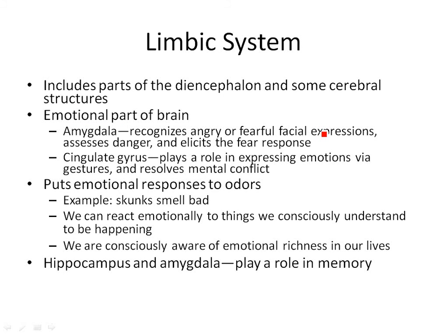There's a generalized area called the limbic system, which includes the diencephalon and parts of the cerebrum. Two main areas are the amygdala and the cingulate gyrus. The amygdala allows us to recognize facial expressions — particularly angry and fearful expressions — and that allows us to assess danger. So if I'm looking out at my classroom and everyone has a scared, puzzled look on their face, I can recognize that with this part of my brain and understand what's going on.